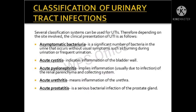The classification of UTI is divided into five types. The first is asymptomatic bacteriuria — there is a significant number of bacteria in the urine but without the usual symptoms such as burning during urination or frequent urination. The second is acute cystitis, which indicates inflammation of the bladder wall.